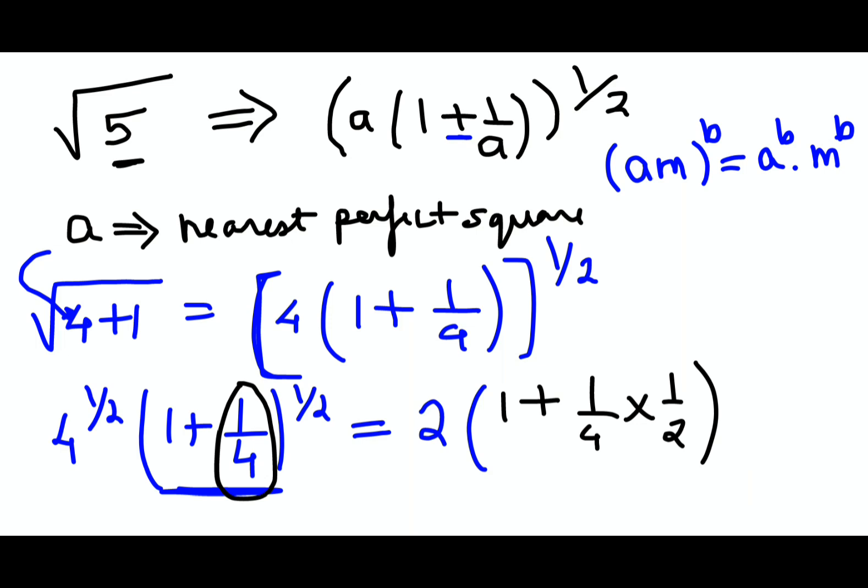If it is less than 1, I can directly write this as nothing but 1 plus 1 upon 4 into 1 upon 2, because the rest of the values become very very close to 0. So that is why, using the binomial expression, I can directly write this fraction, multiply this by 1 by 2.